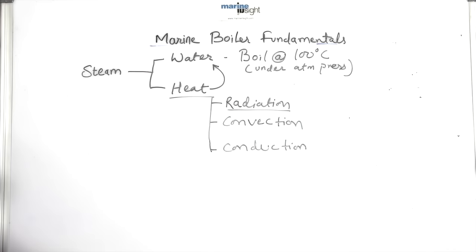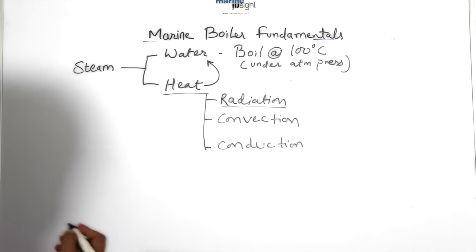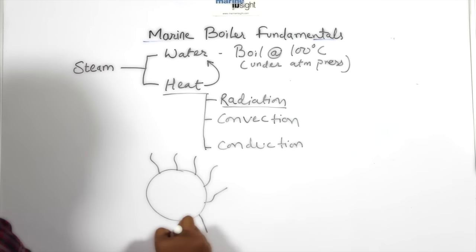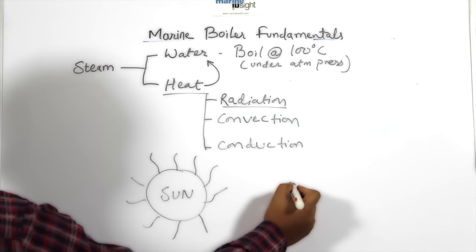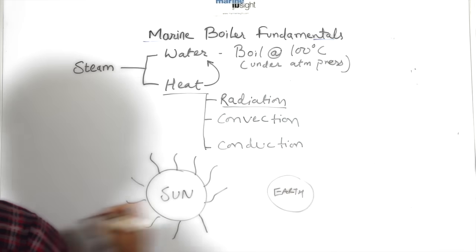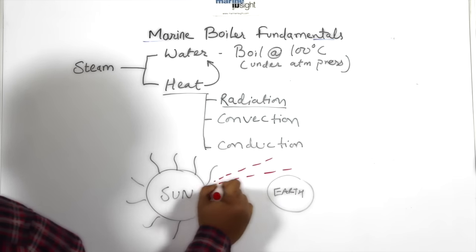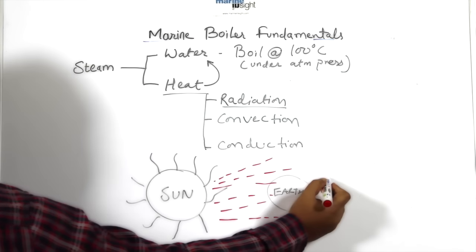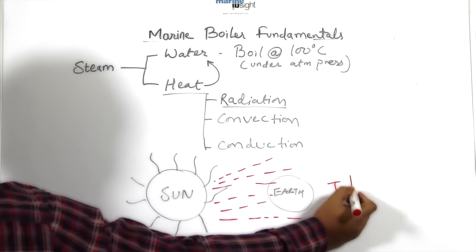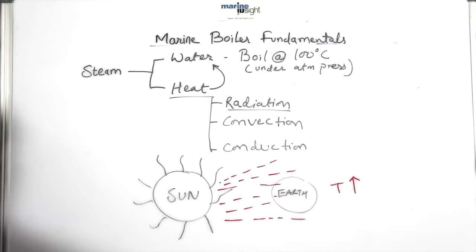Radiation is a heat transfer method which does not involve any physical contact between the heat source and the recipient for the heat to travel. Heat travels in the form of electromagnetic waves. For example, the sun emits rays that travel through the atmosphere and heat up the earth through the process of radiation. These electromagnetic waves do not require any physical medium to travel.